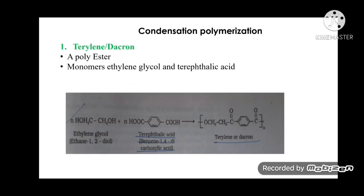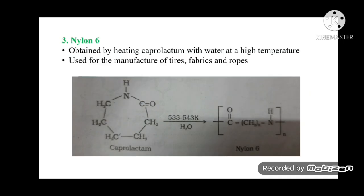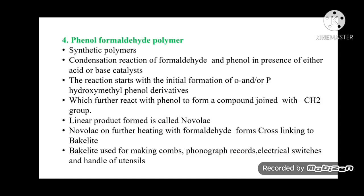Condensation polymerization examples — Terylene/Dacron is a polyester; monomers are ethylene glycol and terephthalic acid. Upon polymerization, small molecules like water are produced as side products. Nylon-66: monomers are hexamethylene diamine and adipic acid, used in making sheets, bristles for brushes, and in the textile industry. Nylon-6 is obtained by heating caprolactam with water at high pressure and is used for manufacture of tires, fabrics, and ropes.